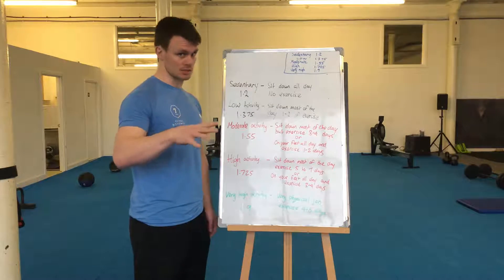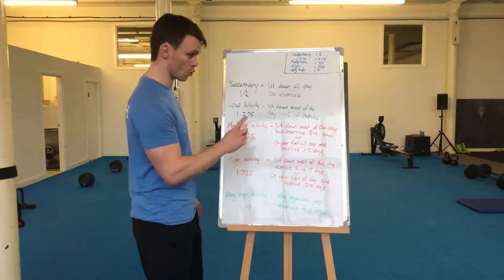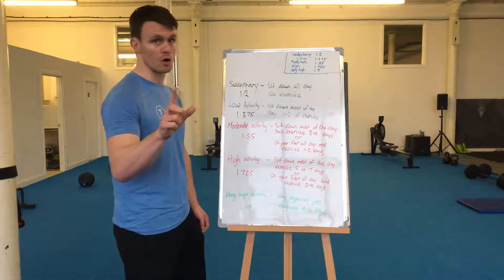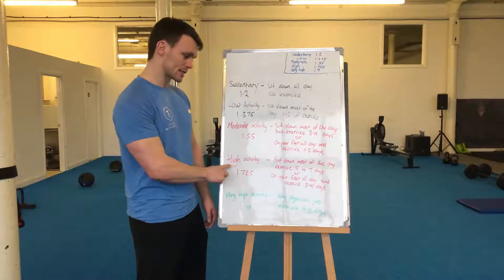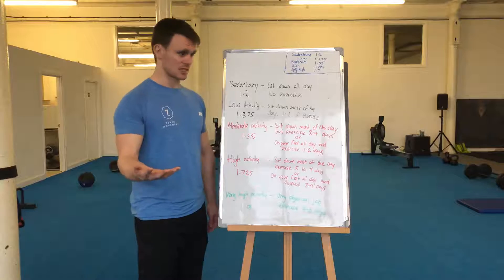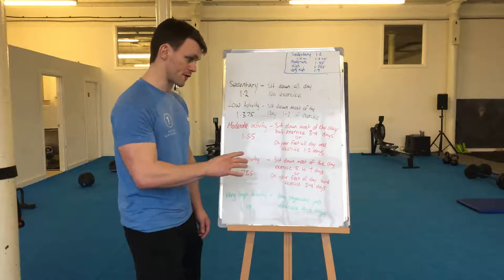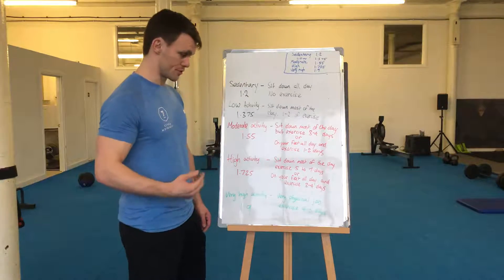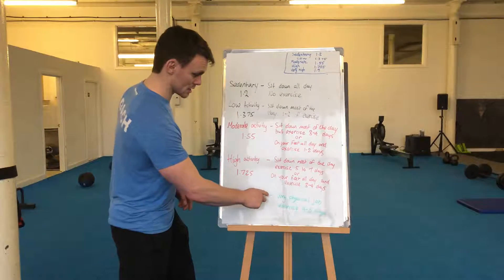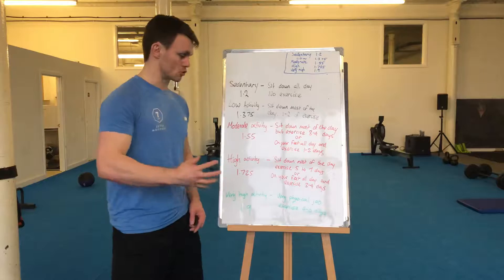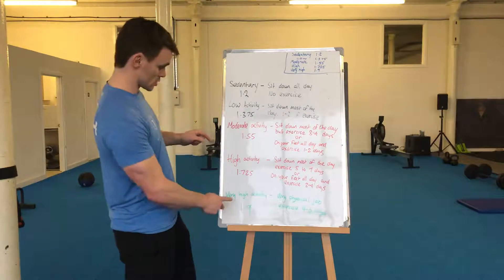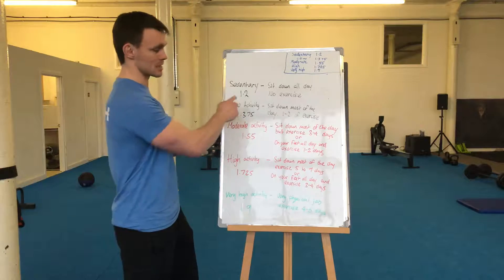Moderate activity means you sit down most of the day but exercise three to four times a week, or you're on your feet all day and exercise once or twice. High activity means you sit down most of the day and exercise five to seven days, or you're on your feet all day and exercise three to four times. Very high activity means a very physical job plus exercising four to six days on top of that.